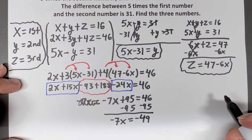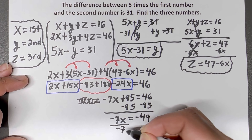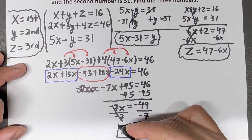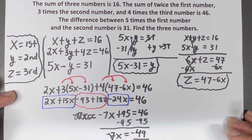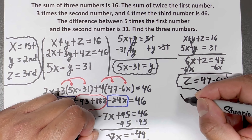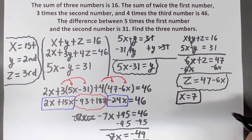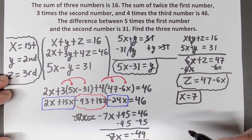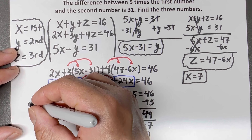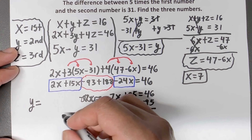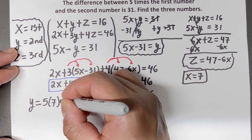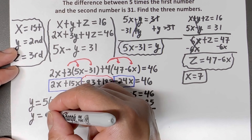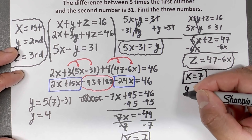Dividing both sides by negative 7, I get x equals 7. That's our first number. Now, since y equals 5x minus 31, I substitute x equals 7: y equals 5 times 7 minus 31, which is 35 minus 31, so y equals 4. That's our second number.